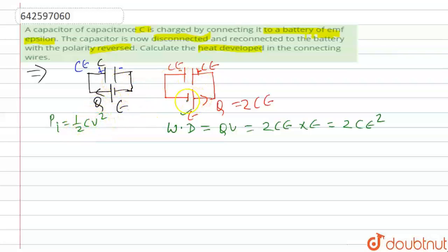Neither the capacitor is changing in the initial case and the final case, nor the potential difference is changing. Like it is epsilon here also, and epsilon here also. That means potential energy is not changing in the capacitor, means energy stored in the capacitor is not changing, but the work done by the battery is changing.